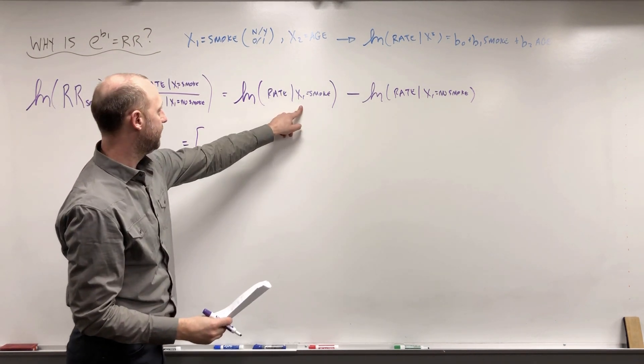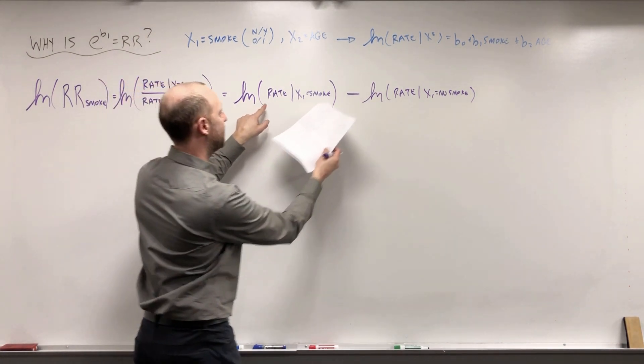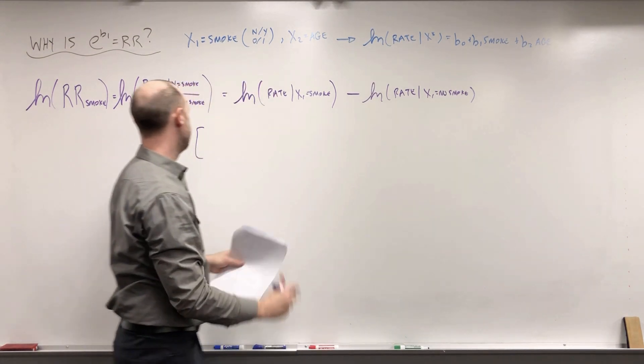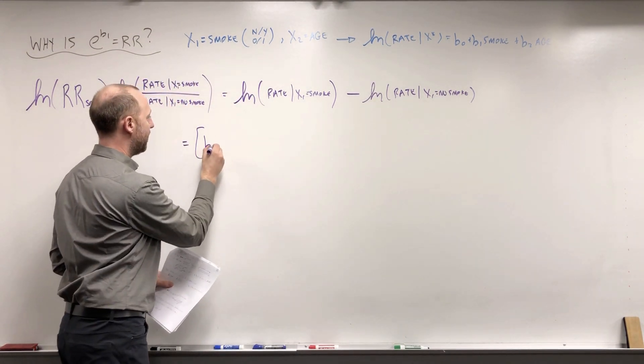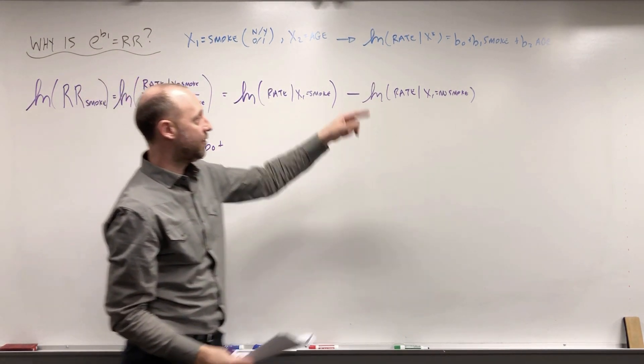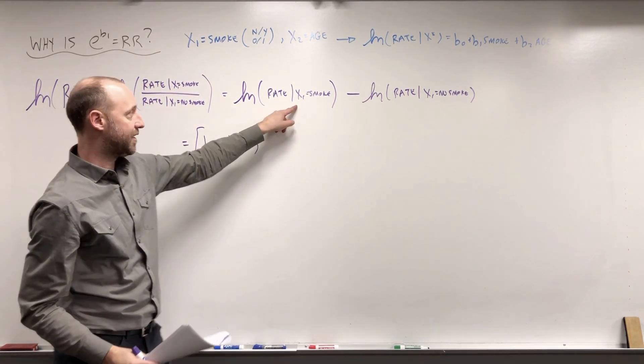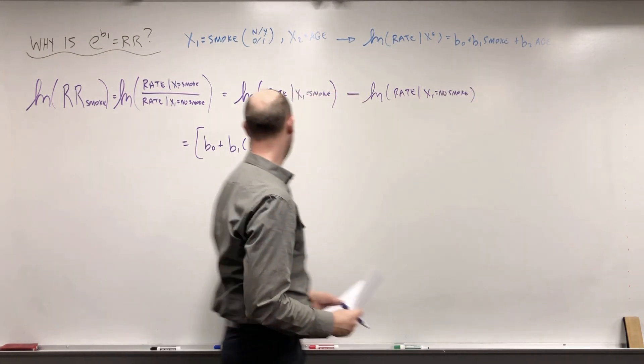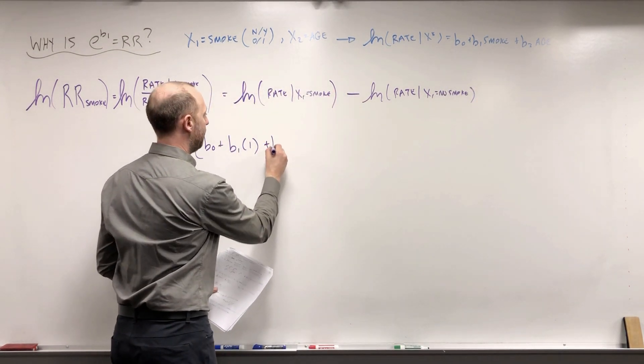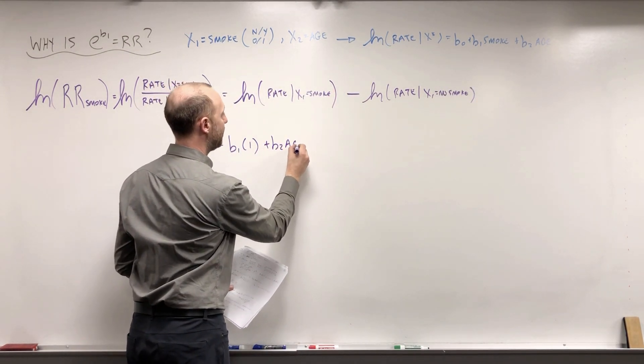First I'm going to work out this one here. This is what our model gives us, what's the log rate given the x's. The log rate given they smoke is b0 plus b1 times 1, right here we're saying they smoke so that indicator takes on a value of 1, plus b2 times whatever their age is.